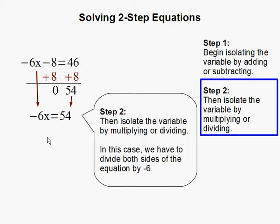Then isolate the variable by multiplying or dividing. In this case, x is almost by itself. We just want to get rid of negative 6.